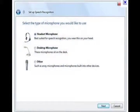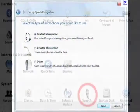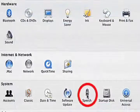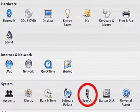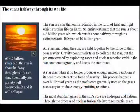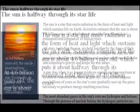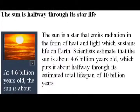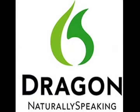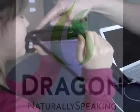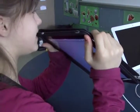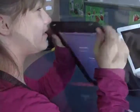Laptop computers come with built-in software that helps students with vision problems see more clearly. One obvious but often overlooked tool is the ability to simply change font size. And for students whose learning style is more auditory than visual, speech-to-text software can be learned to use in just minutes.